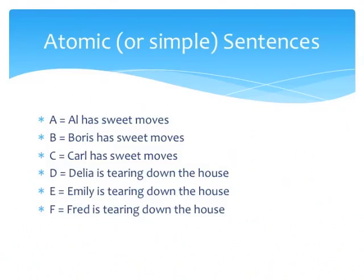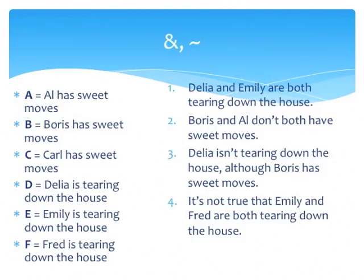Now to our topic. Suppose that we have this set of atomic sentences, A to F, each of which symbolizes a particular English sentence. For instance, A symbolizes 'Al has sweet moves,' F symbolizes 'Fred is tearing down the house,' and so on. Let's keep our list of atomic sentences to the left. To the right, we have sentences that have been formed by taking the atomic sentences and joining them and modifying them in various ways with English conjunctions and negations, which correspond in PL to the ampersand and the tilde. Our task, then, is to take the sentences on the right and translate them into PL.